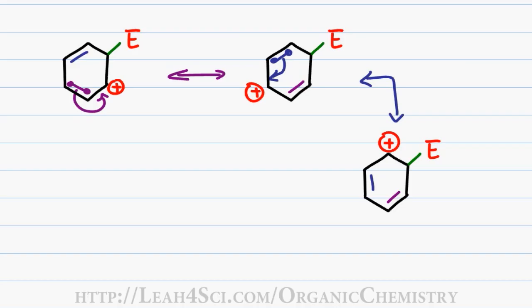These are the three resonance structures for the sigma complex or EAS intermediate and to show that the resonance, we have to put the entire thing into brackets.